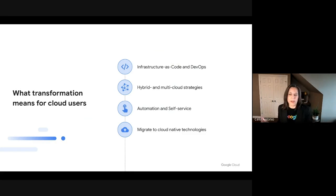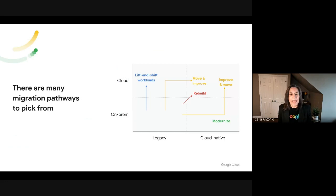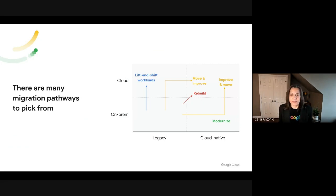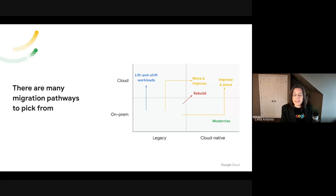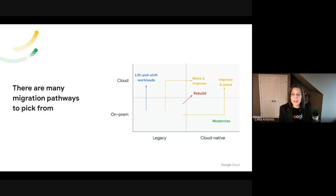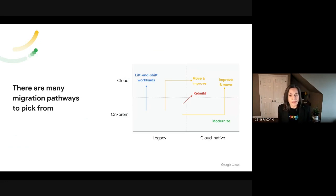How does that transformation happen? The reality is there are multiple journeys and multiple pathways to the cloud, and every one of our customers travels it differently. The first journey is a typical lift-and-shift, where you take your existing workload and move it as-is to the cloud. The good thing is that you are in the cloud once you're done, but you haven't really transformed or modernized that workload.